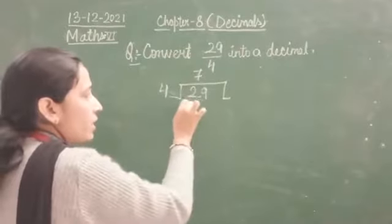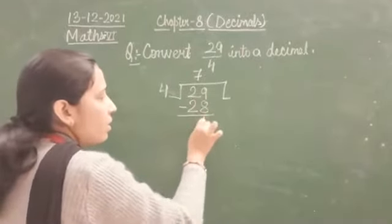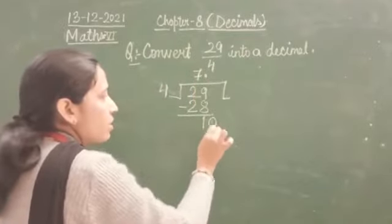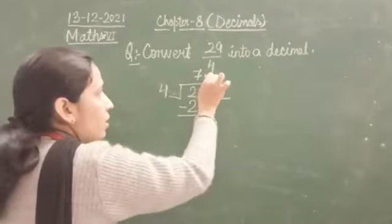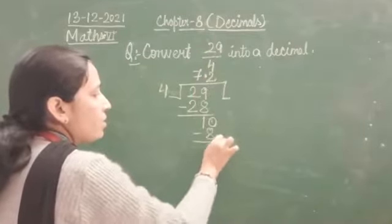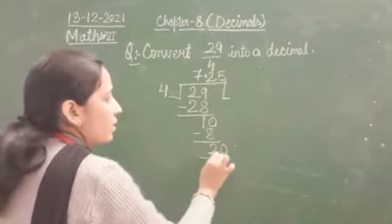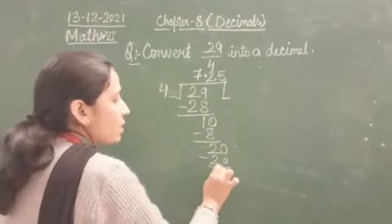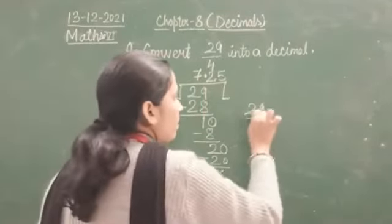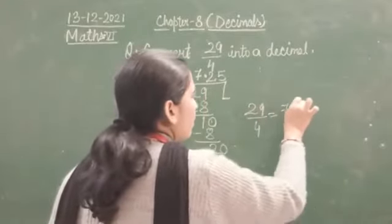4 sevens are 28, so 1 will be left. Now put decimal and put a 0. 4 twos are 8. Again 0 — 4 fives are 20. So the decimal of this 29 by 4 will be 7.25.